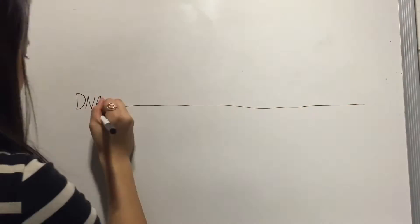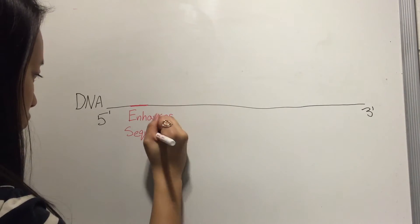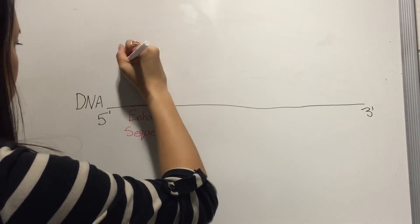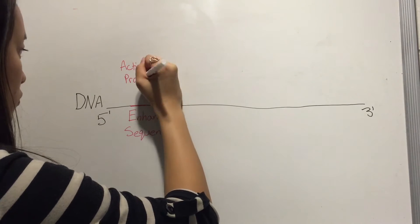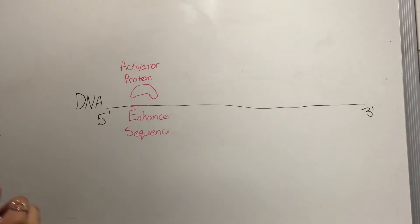An enhancer is a DNA sequence that increases the expression of distant genes on the same DNA molecule. It is position independent, which means it can be upstream or downstream of the target genes. Regulatory proteins, called activators, bind to the enhancer.